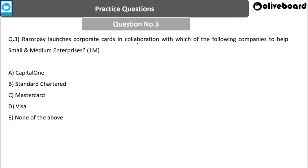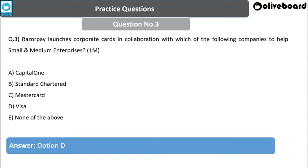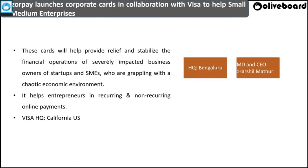Next question: Razorpay launched corporate cards in collaboration with which company to help small and medium enterprises? Options: Capital One, Standard Chartered, Mastercard, Visa, or None of the above. The answer is Visa. Razorpay and Visa are collaborating to launch new corporate cards that will provide relief and help stabilize financial operations of startups and SMEs impacted by COVID-19, acting as a one-stop card for recurring and non-recurring online payments.